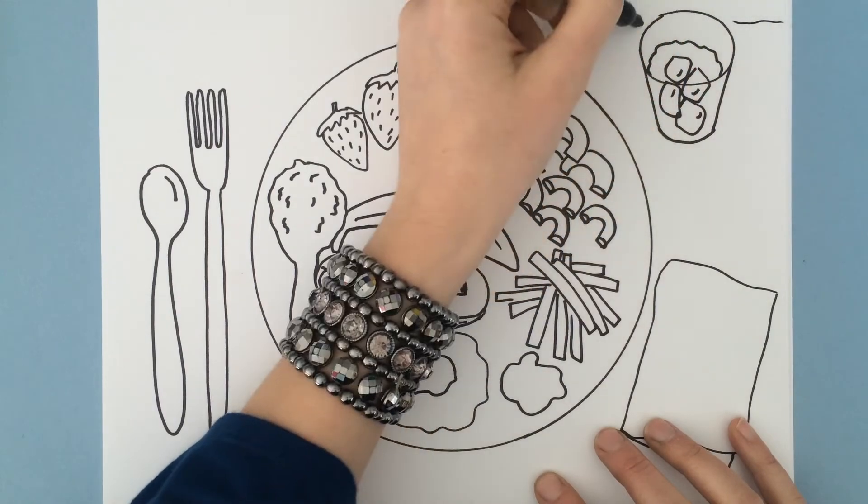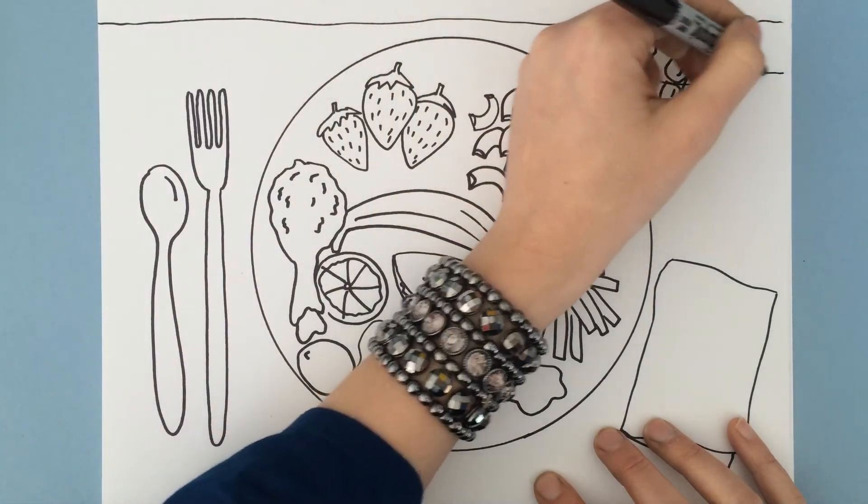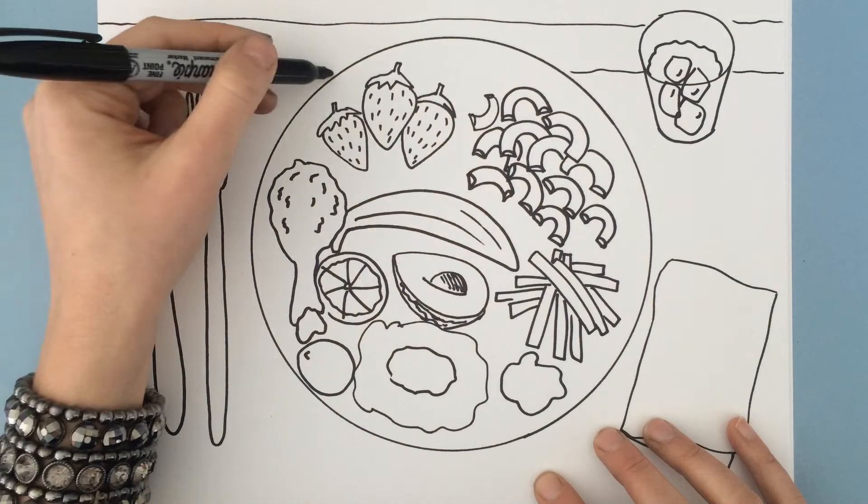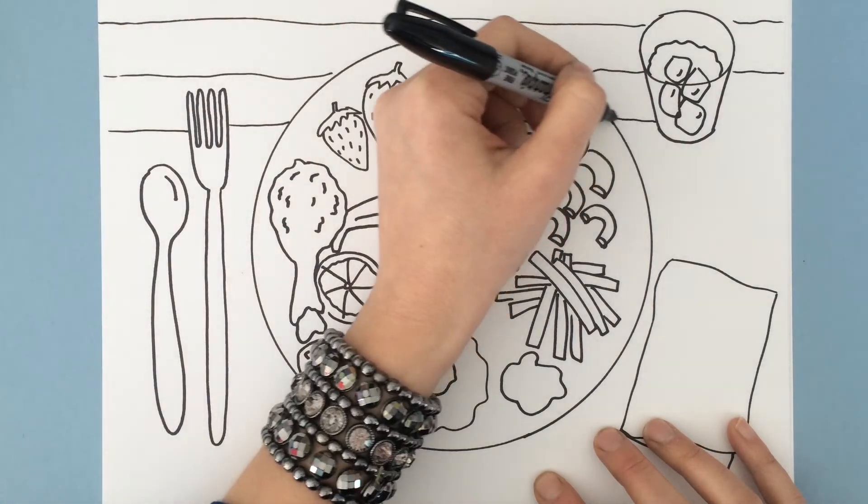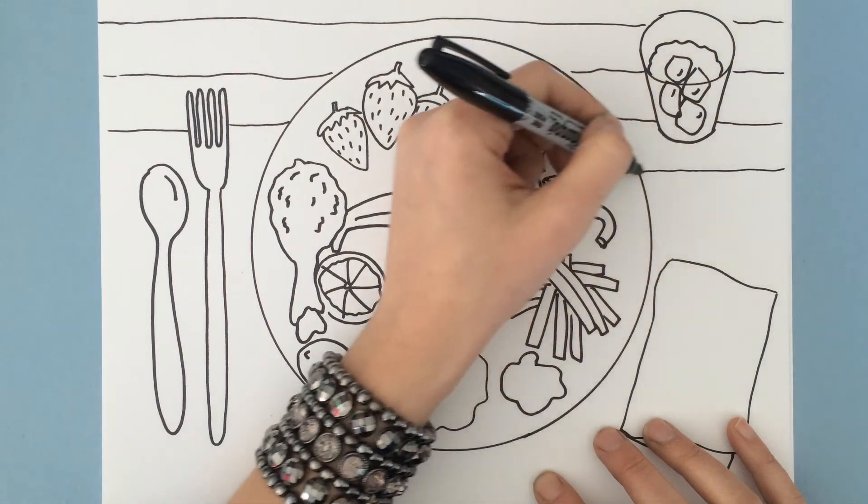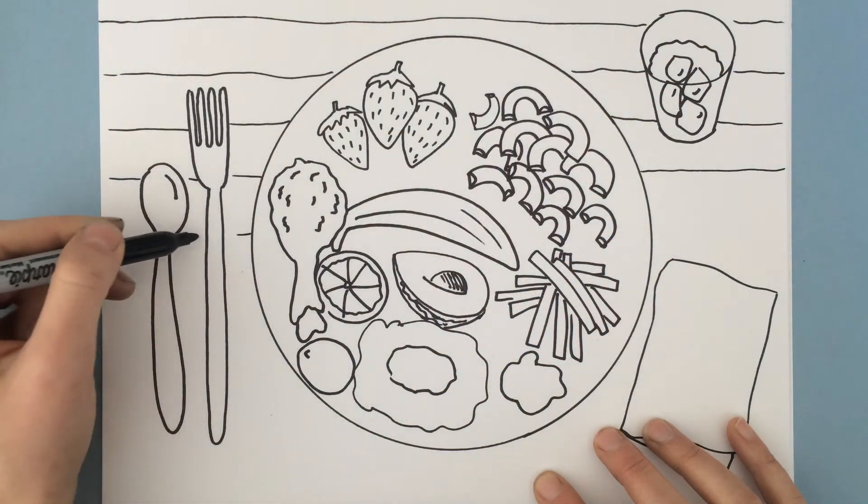But sometimes whenever I eat supper at my mama's house, and that's one of the best places to eat supper because she's such a good cook, I eat on a tablecloth. And her tablecloth is checkered. So Ms. Raven's drawing lines behind my plate and adding a pattern to the tablecloth.